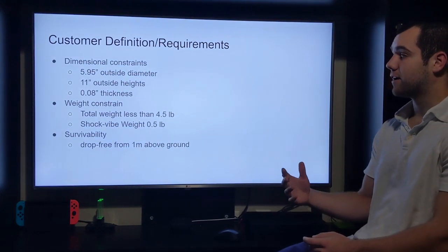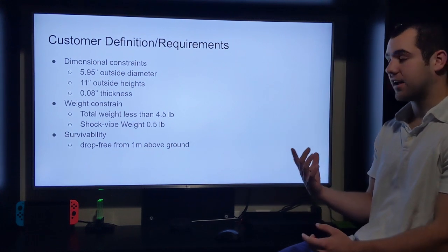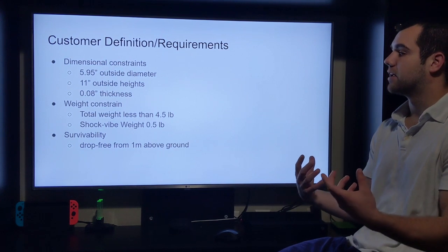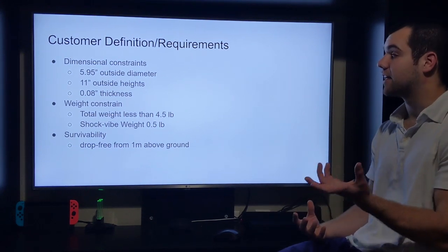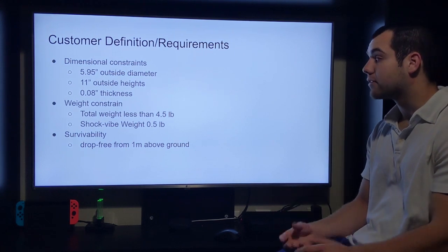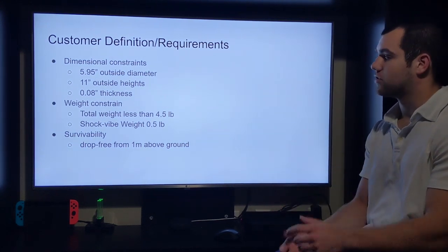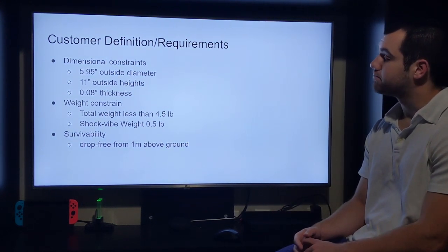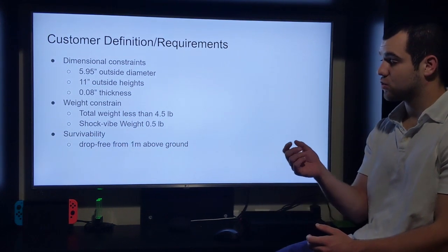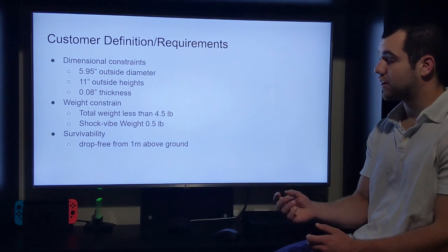So this is what the customer gave to us. For us it was Dr. Caruso of the physics department. 5.95 inch tolerance on the outside diameter. Initially we had asked him, hey how critical is this? And he said, you know, he wants it exactly that dimension, plus or minus like 0.05. So just so you know the tolerances we're dealing with. 11 inch outside height, 0.08 inch wall thickness, so very thin.